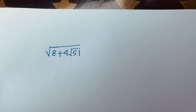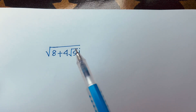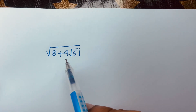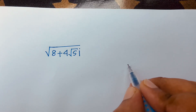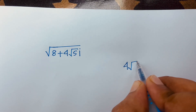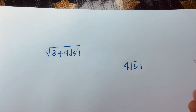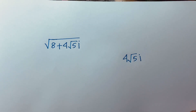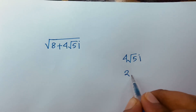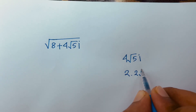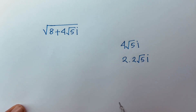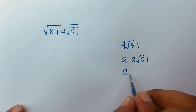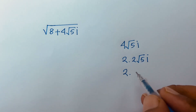Hello everyone. In this video we'll solve an interesting math problem: square root of (8 + 4√5·i). First, I can rewrite 4√5·i as 2 times 2√5·i.